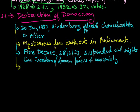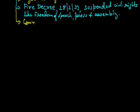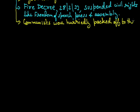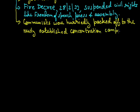Hitler made himself more powerful by starting to kill people from other parties so that only one party would be left in Germany. He started with the communists — all the communists were hurriedly packed off to the newly established concentration camps, which were camps where people were killed in the gas chambers.